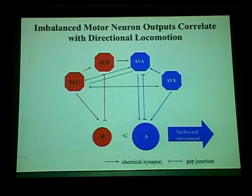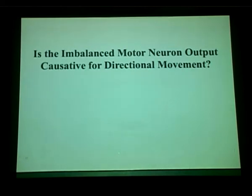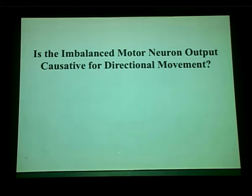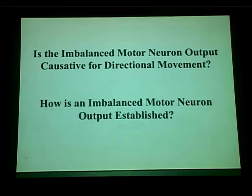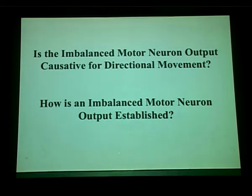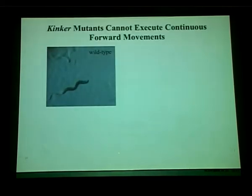These activity profiles suggest that all motor neurons maintain a basal level of activity during locomotion regardless of direction, but the motor circuit generates a separation or imbalance. When B is higher than A, the animal generates forward locomotion; when A is higher than B, the animal generates backward locomotion. The circuit actively and simultaneously switches this coordination to generate a change of directionality. So far we only observe this as a phenomenon — is this a consequence of direction switching, or is it actually the causal driving force?